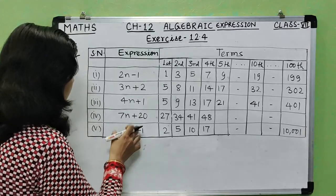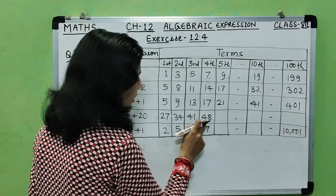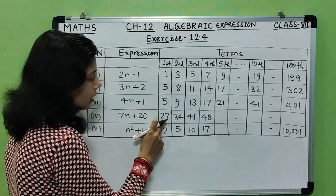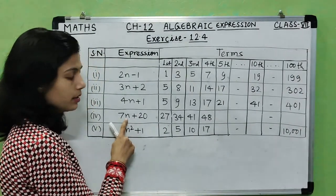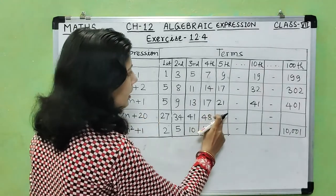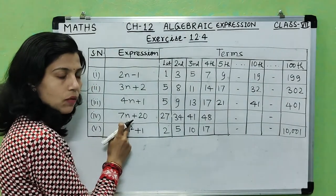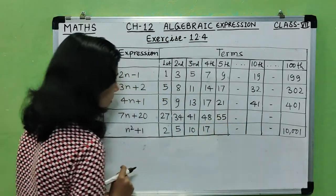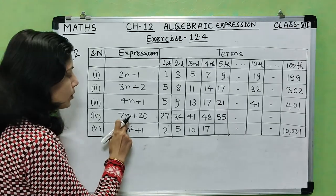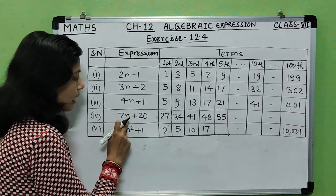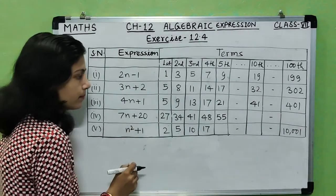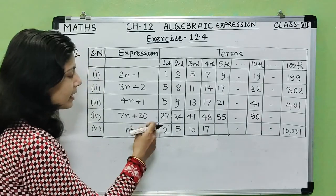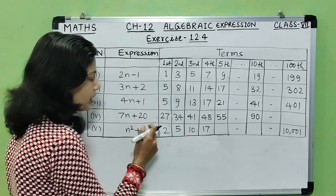For the expression 7n plus 20, the pattern is 27, 34, 41, 48. The first term: 7 into 1 plus 20 equals 27. For the fifth term: 7 into 5 plus 20 equals 35 plus 20 equals 55. For the tenth term: 7 into 10 plus 20 equals 70 plus 20 equals 90. For the hundredth term: 7 into 100 plus 20 equals 700 plus 20 equals 720.